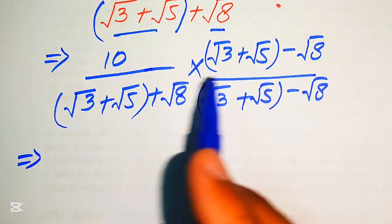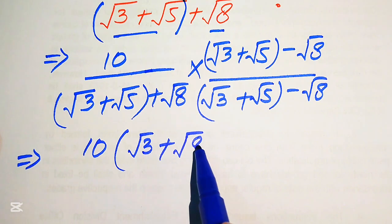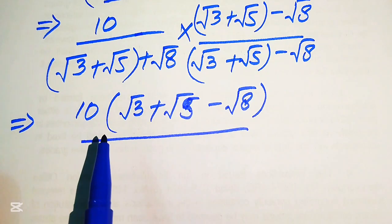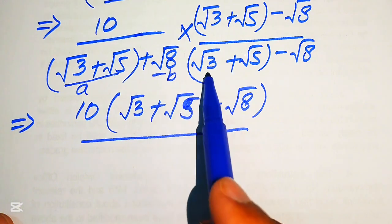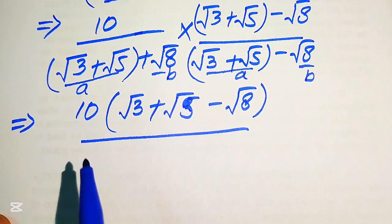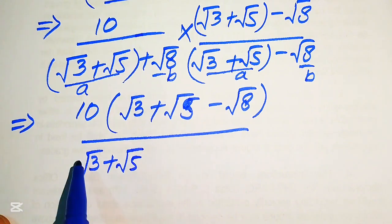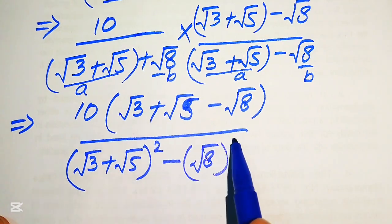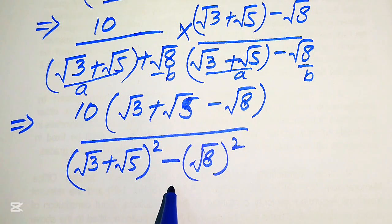We multiply the numerator terms: we have 10 times (square root of 3 plus square root of 5 minus square root of 8) divided by the denominator. We can apply the algebraic formula: if we consider 'a' = (square root of 3 plus square root of 5) and 'b' = square root of 8, then (a+b)(a-b) = a² minus b², giving us (square root of 3 plus square root of 5) whole squared minus (square root of 8) whole squared.